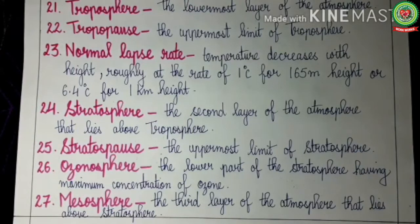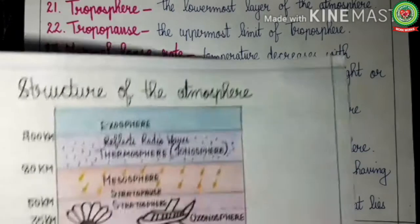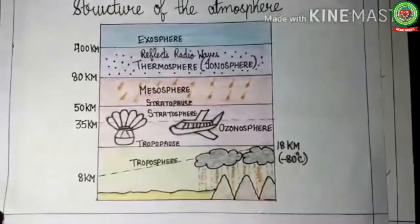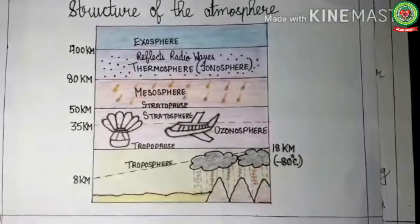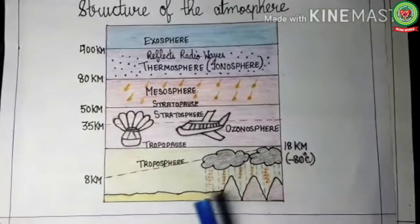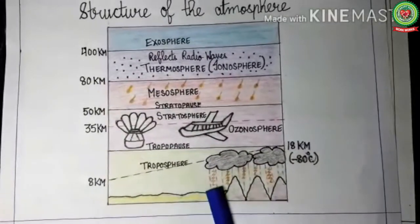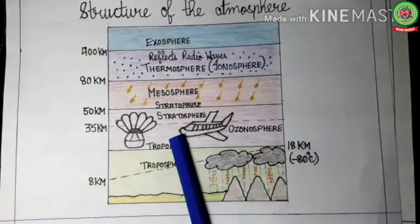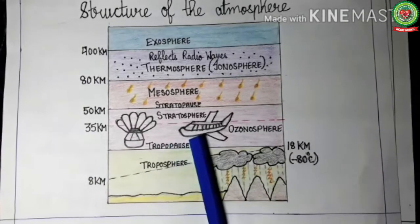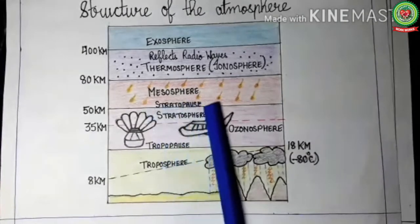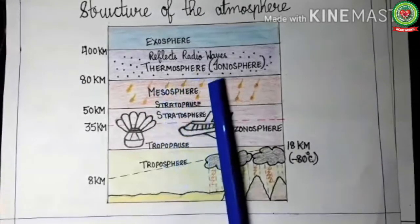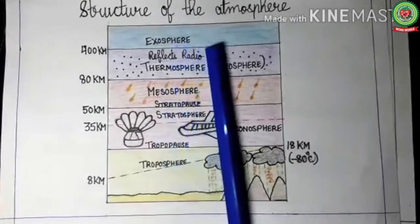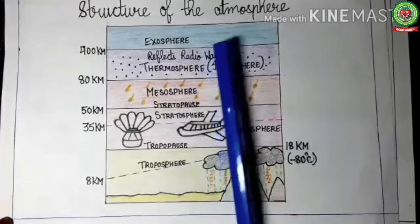Now we will discuss the terms related to the layers of the atmosphere. Here is a diagram that shows the different layers. The first layer is troposphere, next is stratosphere, followed by mesosphere. The fourth layer is thermosphere or ionosphere, and the last layer is exosphere. Let us see their definitions.